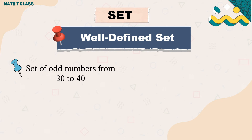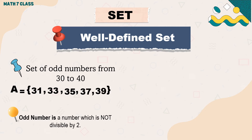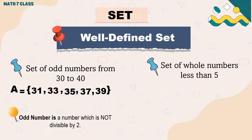Another example: a set of odd numbers from 30 to 40. An odd number is a number which is not divisible by 2. So the set of odd numbers from 30 to 40 are 31, 33, 35, 37, and 39.